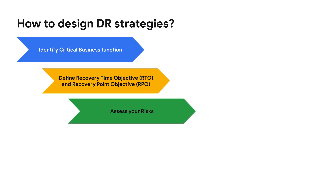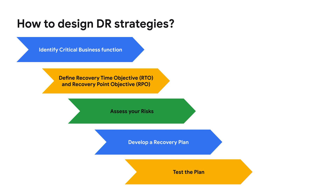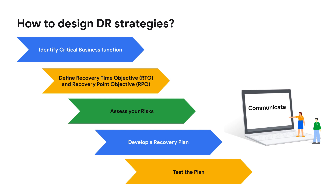Consider what types of disasters are most likely to impact your organization. Once you know what risks you face, you can start to develop strategies to mitigate them. Your recovery plan should include steps for recovering each critical business function, a timeline for recovery, and a budget. It's important to review your recovery plan regularly, run tabletop exercises, and simulate disaster scenarios to make sure your plan is effective and up to date. Make sure key stakeholders know their roles. If you don't have the in-house expertise, consider working with Google Cloud experts.